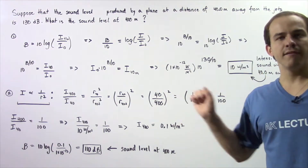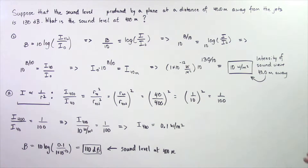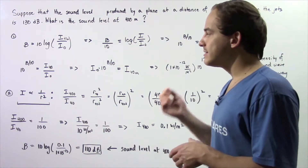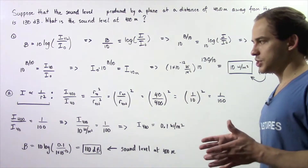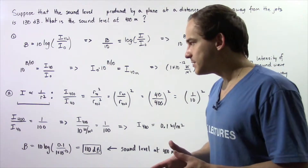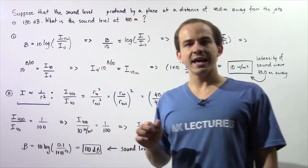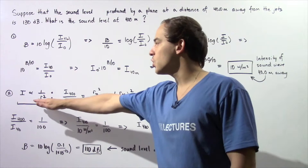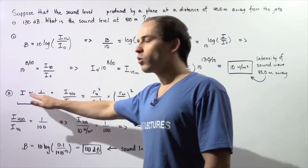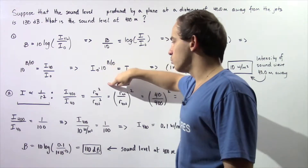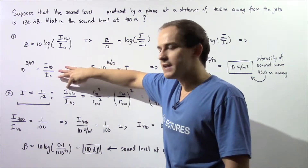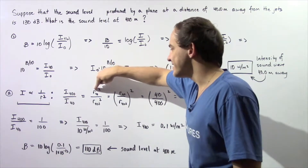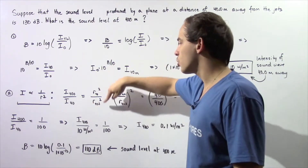This is the intensity of the sound at a distance of 40 meters away from the jets of the plane. Now let's move on to step 2. In step 2 we need to recall the relationship between intensity and distance. The intensity is inversely related to the square of the distance. This implies that the ratio of the intensity at 400 meters to the intensity at 40 meters is equal to the distance at 40 meters squared divided by the distance at 400 meters squared.